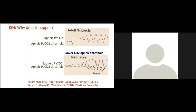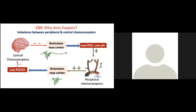So if we give babies with frequent desaturations a little supplemental oxygen, we may stop the periodic breathing, transition to continuous regular breathing, and thus avoid the desaturations.